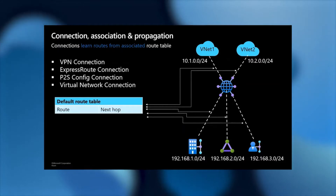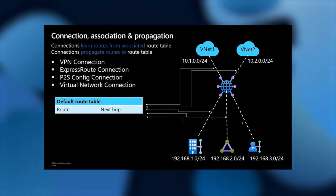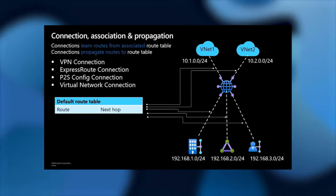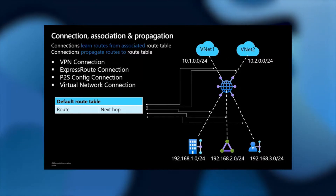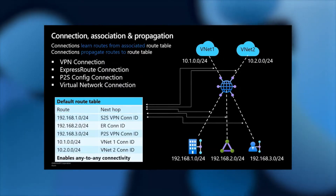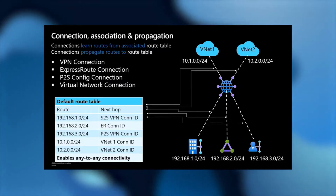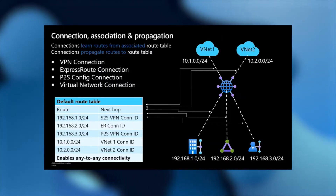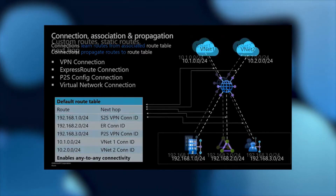All the VNets and branches are associated to a default route table. Once associated, they need to propagate routes to that route table. So VNet1 propagates its route to the default route table — this is how the default route table learns routes dynamically. Here I have propagated routes from all branches (192 address prefixes) and all VNets (10 address prefixes). Because all these routes show up in the default route table, and all VNets and branches associate their connections to it, this is how they get any-to-any connectivity.